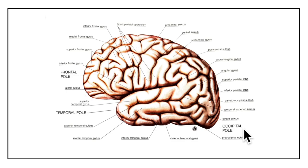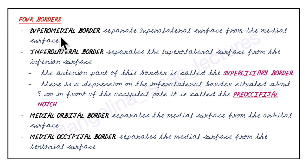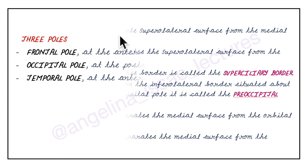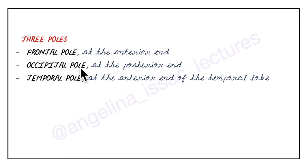Looking at the three poles: we have the frontal pole at the anterior end, the occipital pole at the posterior end, and the temporal pole at the anterior end of the temporal lobe. To summarize: the supramedial border separates the supralateral from the medial surface; the infralateral border separates the supralateral from the inferior surface, with its anterior part called the supraciliary border and a pre-occipital notch 5 cm in front of the occipital pole; the medial orbital border and medial occipital border separate medial from orbital and tentorial surfaces respectively.